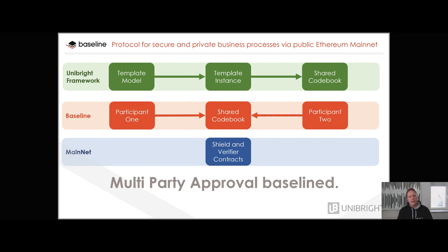The main idea is: you have the mainnet — always on as a publicly available blockchain — and you have your own baseline architecture between all participants of a business process. From the Unibright perspective, it's still very valuable to have all the code generation capability, because now it's even more important when you talk about shared code books. Code that is not only published once in one smart contract on one blockchain but shared between participants makes it even more important that they all rely on the same understanding and the same model.